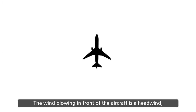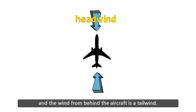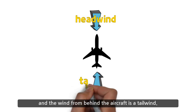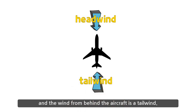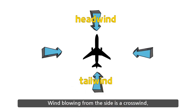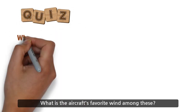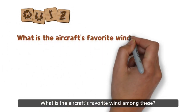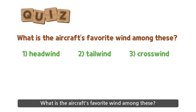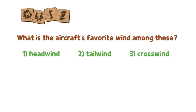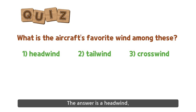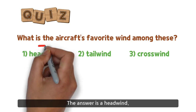The wind blowing in front of the aircraft is a headwind, and the wind from behind the aircraft is a tailwind. Wind blowing from the side is a crosswind. Let's take a quiz here. What is the aircraft's favorite wind among these? The answer is a headwind.